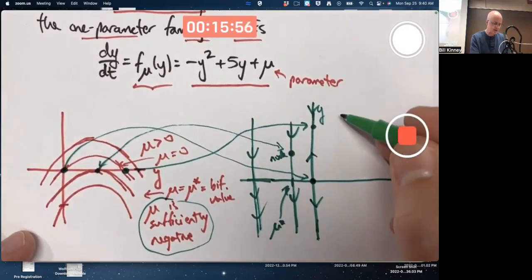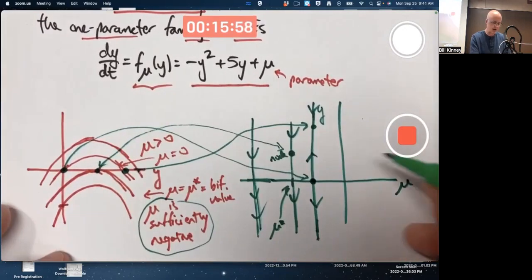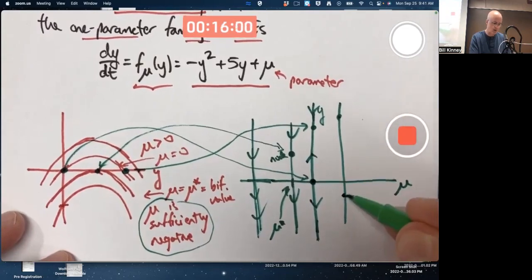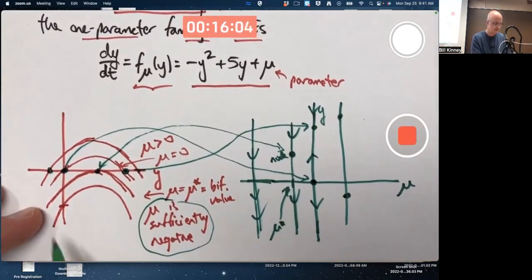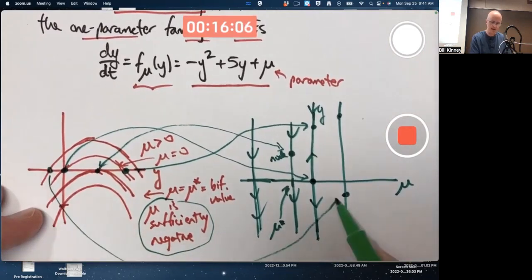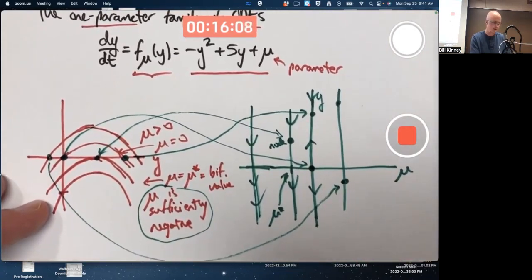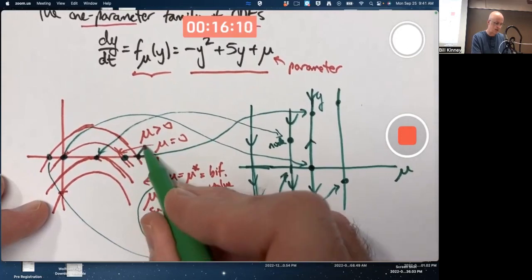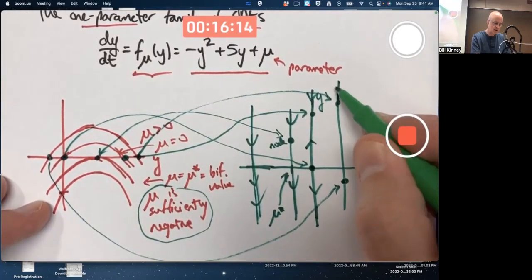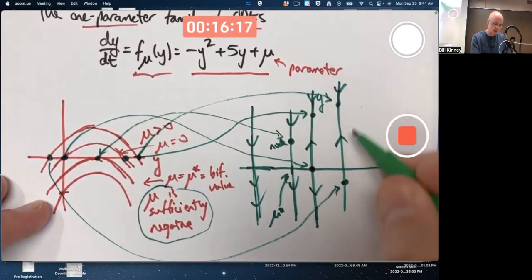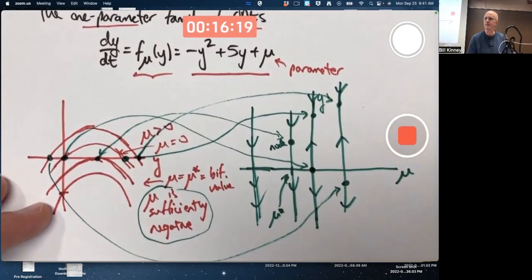And now as mu increases further, the graph gets higher, the equilibrium points continue to spread out more. One becomes negative over there. That corresponds to that one. One is a larger positive value. But the nature of the phase line is the same. Down, up, down.